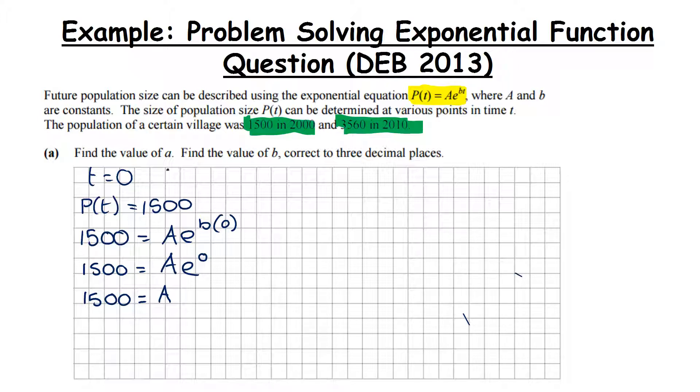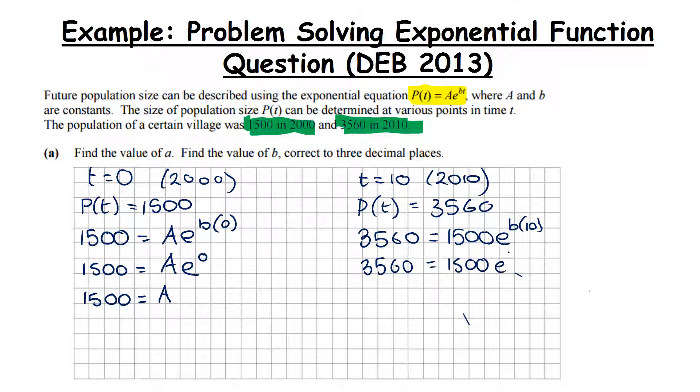Let's take a look at our second point. So if the year 2000 was time equal to zero, then the year 2010 must be time equals 10. We're always working with t equals zero to begin with and from there we're counting on. Here they've told us P(t) is equal to 3560. So let's sub into the function - 3560 is equal to, now remember we know A this time, so that's 1500, and this is E to the power of B times 10. So 3560 is equal to 1500 E to the power of 10B.